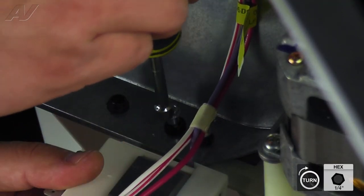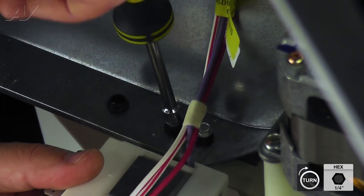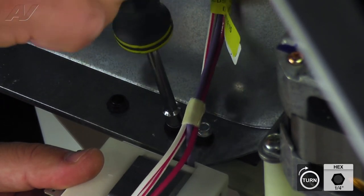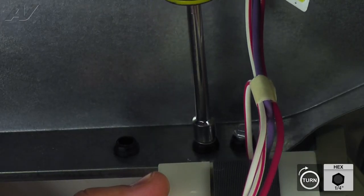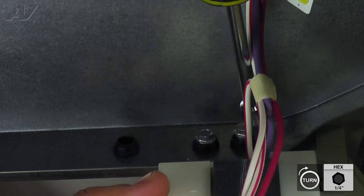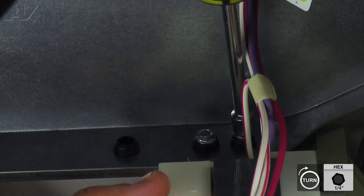Now, install the second mounting screw. You can tighten this screw fully. Make sure to return to the first screw and tighten it fully also.